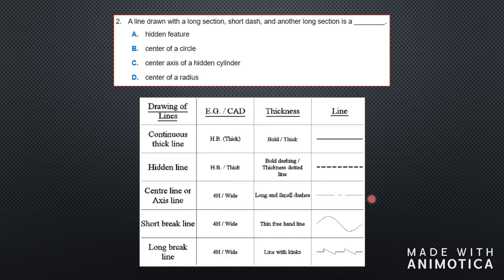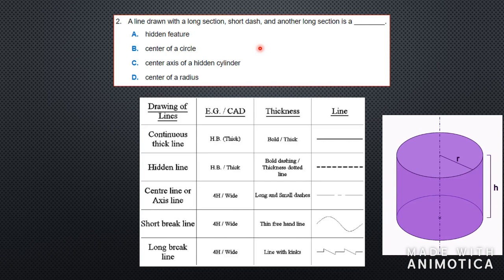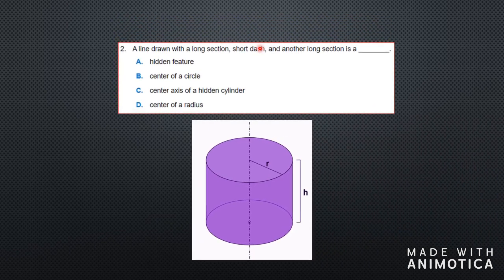The pattern is: long, short, long, short as you go along. This is used to show the center line or the center axis of an object. The only matching option is center axis of a cylinder. Here is an example of a cylinder showing where the center of the two circles are joined using the axis — the axis runs through the middle of the cylinder. So the answer is: long dash, short dash, another long section is called a center axis.